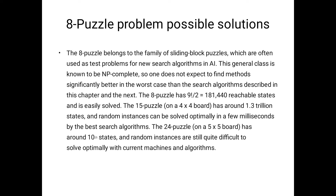The eight puzzle has 9!/2 reachable states and is easily solved. For the 15-puzzle on a four-by-four board, there are 1.3 trillion states, and random instances can be solved optimally in a few milliseconds by the best search algorithms. For the 24-puzzle on a five-by-five board, there are 10^25 states and random instances are still quite difficult to solve optimally with current algorithms.